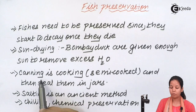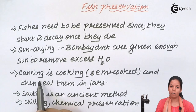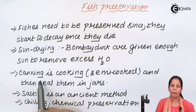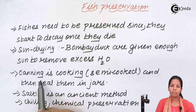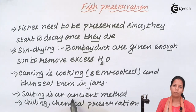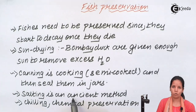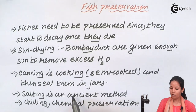Canning is a process in which fishes are semi-cooked, salt is added, and then they are packed with the presence of certain preservatives. Salting is the most ancient method that has been used — sun drying the fishes and adding salt to them.